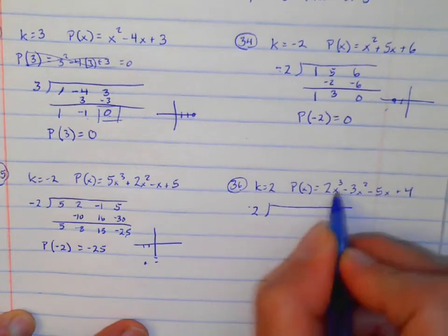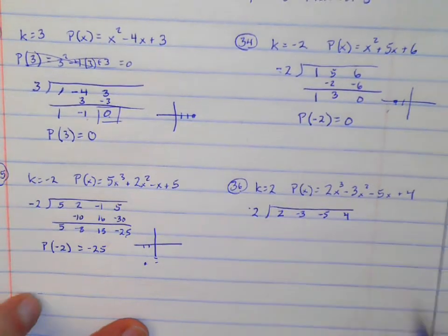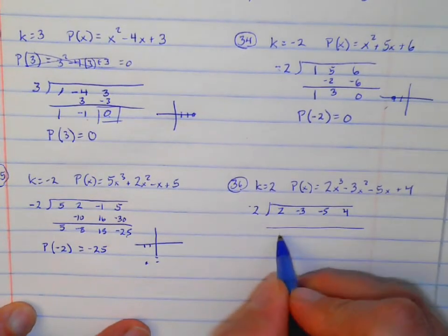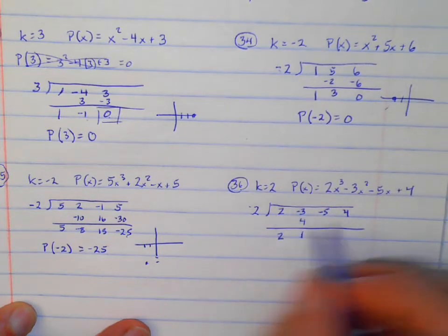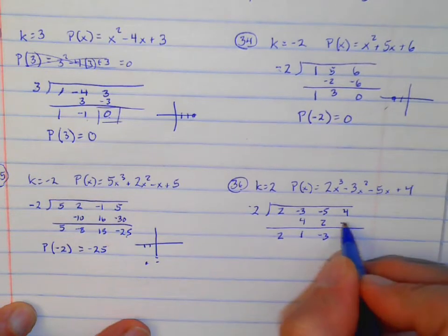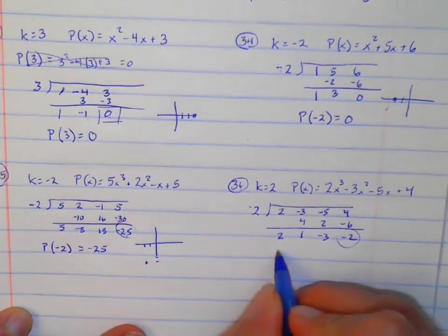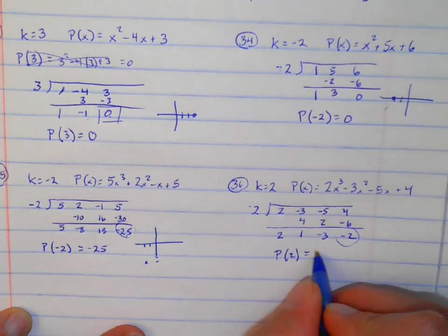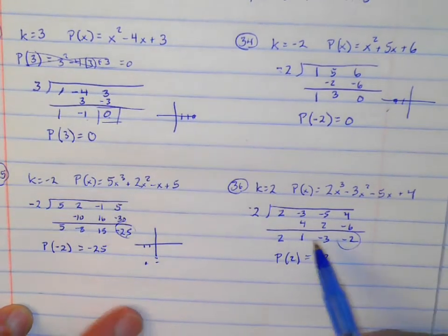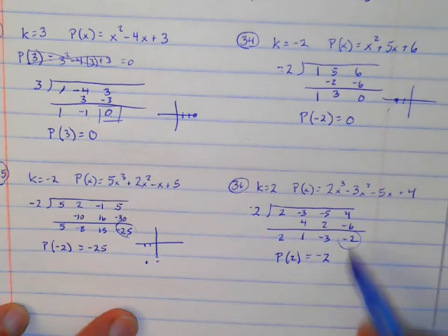Divide a 2 out. It would be 2x to the third, minus 3x squared, minus 5x, plus 4. Bring the 2 down. 2 times 2 is 4 — add. 2 times 1 is 2 — add. And negative 6 — add. So looking at my remainder, I know that P of 2 equals negative 2. This might actually be easier than plugging 2 into all those x's, because synthetic division really doesn't take that long to do.